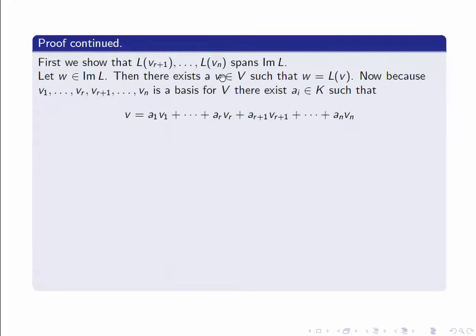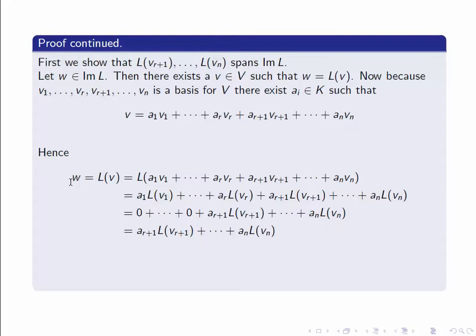Call it W. By the definition of the image, we can write W as L(v) for some v in V. Because V1 up to Vn is a basis for V, we can write v as a linear combination: A1·V1 + ... + AN·VN. Now let's apply L to that. W = L(v) = L of this linear combination. Because L is a linear transformation, L applied to a linear combination is the corresponding combination of the L of the Vs: so W = A1·L(V1) + ... + AN·L(VN).